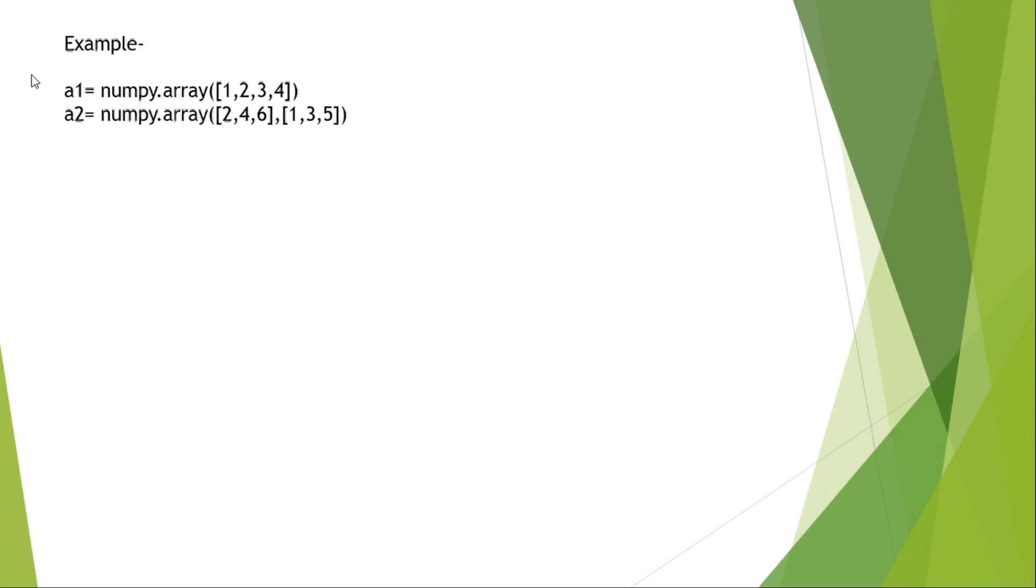Let's have an example. A1 equals numpy.array(1, 2, 3, 4), meaning here we are going to have a 1D array. Whereas A2 equals numpy.array(2, 4, 6, 1, 3, 5), here we are going to have a 2D array. Let's have a look at how these elements are filled. For A1, elements will be filled as 1, 2, 3, 4, and axis equals 0. For A2, elements will be filled along axis equals 0 and axis equals 1.